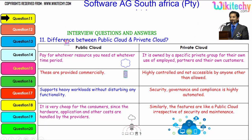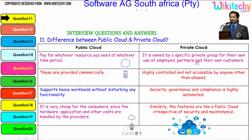So here is the question: the difference between the public cloud and the private cloud. Public cloud is nothing but viewing a film in a cinema theatre, whereas viewing a film at home using a DVD is your private cloud. With public cloud, you pay for whatever resource you need at whatever time period.